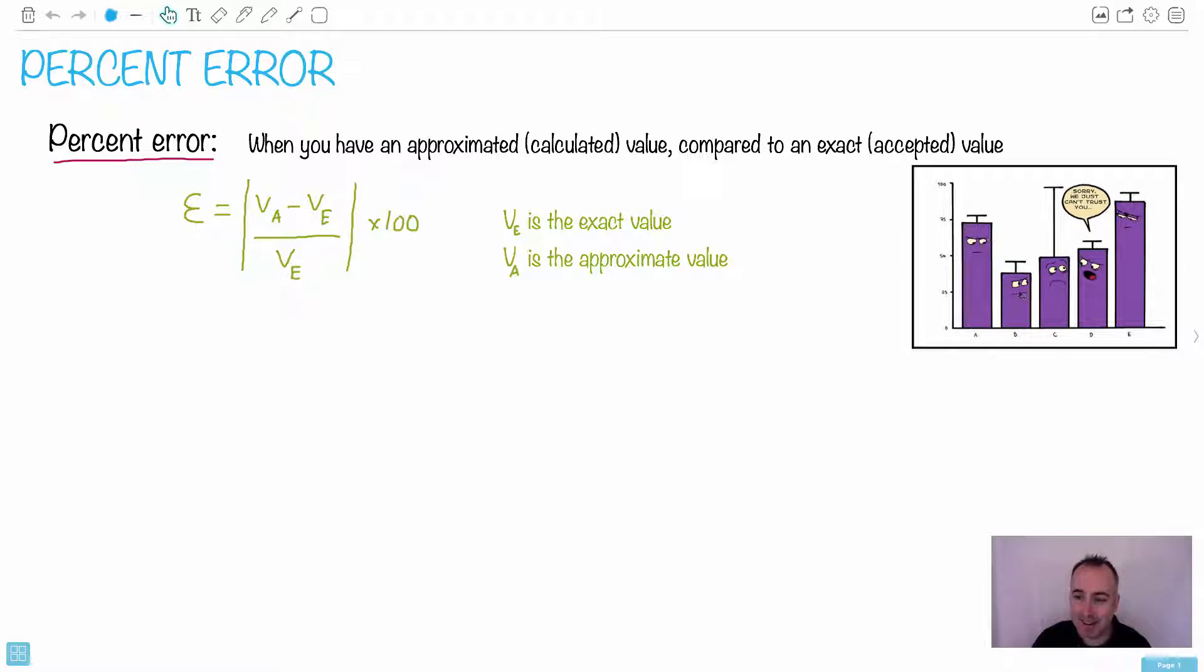I like this little joke right here with these histograms. These here represent error bars, like how unsure you are. So you say, sorry, we just can't trust you because the uncertainty, the error bar is too big.